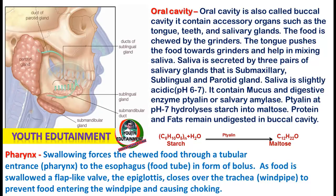The three pairs of salivary glands are the submaxillary, sublingual, and parotid glands. Saliva is slightly acidic and contains mucus and the digestive enzyme ptyalin, also called salivary amylase. At pH 7, ptyalin hydrolyzes starch into maltose. Protein and fat remain undigested in the buccal cavity.